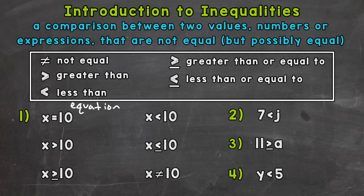No other solutions will make this equation true. For example, if we were to plug in x equals 9, would 9 equal 10? No. The only thing that x can equal is 10 — 10 equals 10. So I wanted to include an equation so we could compare this to the inequalities.